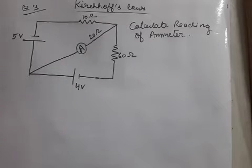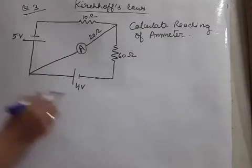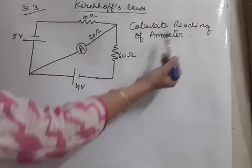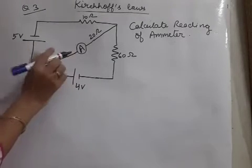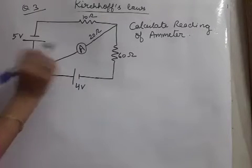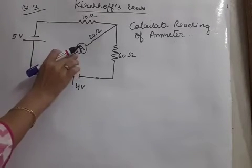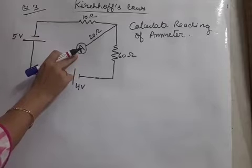Let us have question number 3 based on Kirchhoff's laws. In this circuit, we have to calculate the reading of the ammeter. Now, ammeter means A inside a circle. So this is ammeter which measures the current.